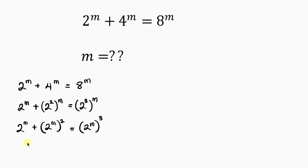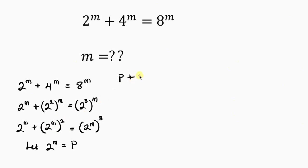I can say: let 2 to the power of m be equal to p. So wherever I see 2 to the power of m, I'll write p. This gives us: p plus p squared equal to p cubed.